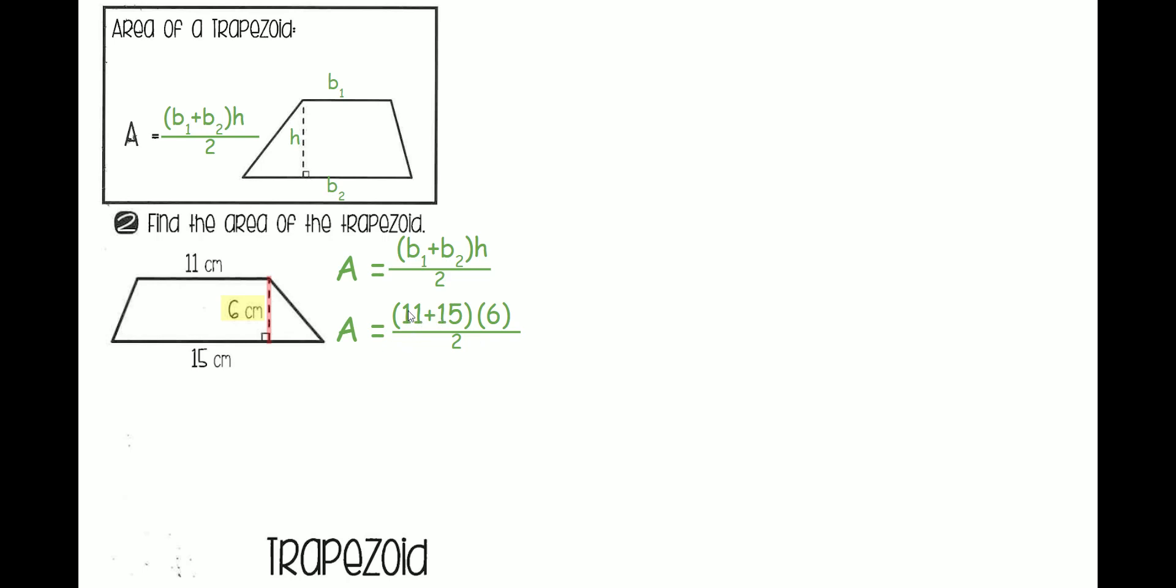I'm going to start off by simplifying the inside of this parentheses. 11 plus 15 is 26. Now, rewrite everything else. Bring the 6 down, the line, and then the 2.